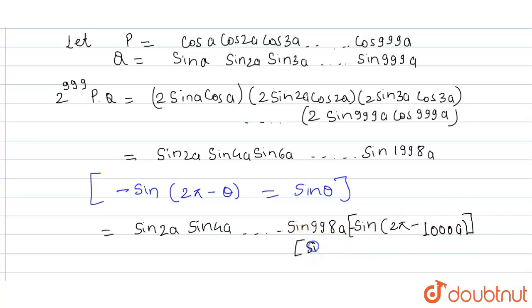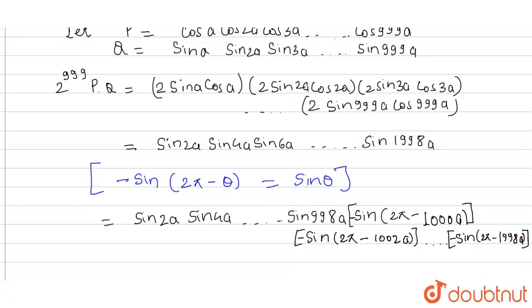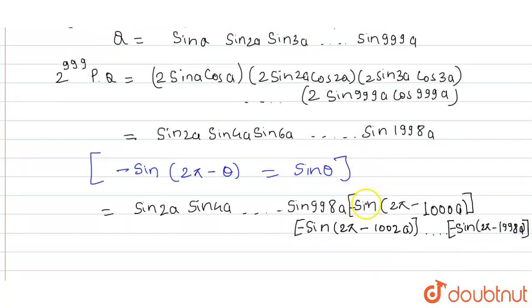The next term will be sin 2π minus 1002a, and this continues up to sin 2π minus 1998a. After sin 998a we should write sin 1000a, but instead we used this pattern.